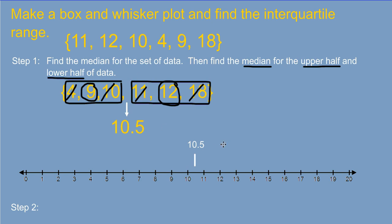Now, when we mark that on our box and whisker plot, we mark the 12 like so and the 9, and all you need to do right now is just connect them to make the box.